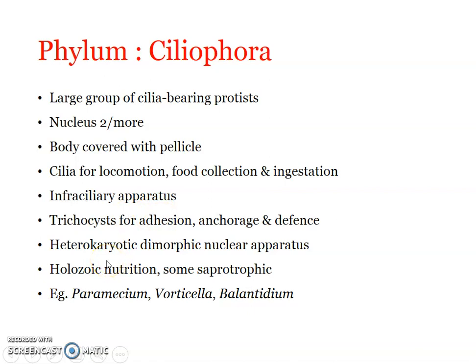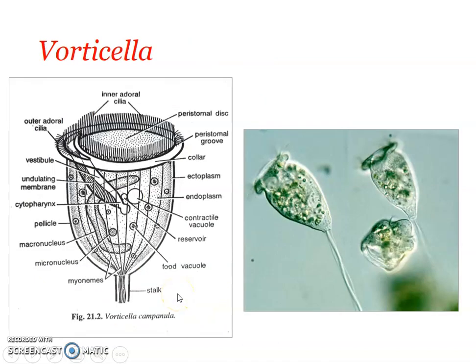The trichocysts associated with the pellicle are used for attachment, anchorage, and defense, as we have already seen in Paramecium. The nuclear apparatus is heterokaryotic and dimorphic — more than one nucleus is present, and they are of different sizes. In the case of Paramecium, we have seen the macronucleus and micronucleus — those are the two differently-sized nuclei. Nutrition is holozoic, with very few saprotrophic forms also found. Examples include Paramecium, Vorticella, and Balantidium.